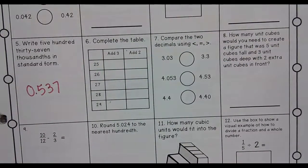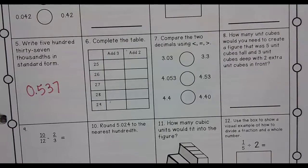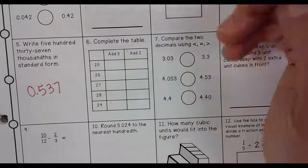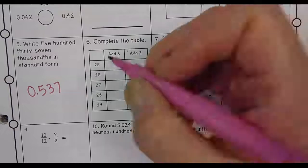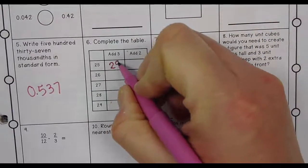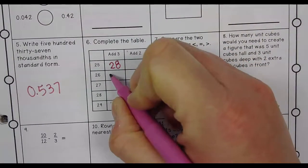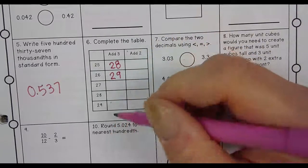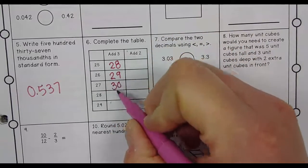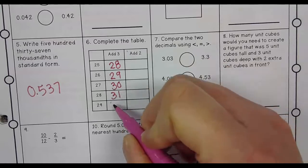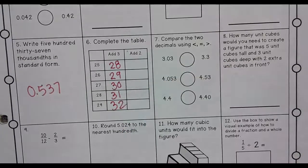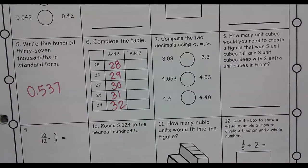Complete the table. So 25 plus 3 is, go down the line, 28, 29, 30, 31. Beautiful line.